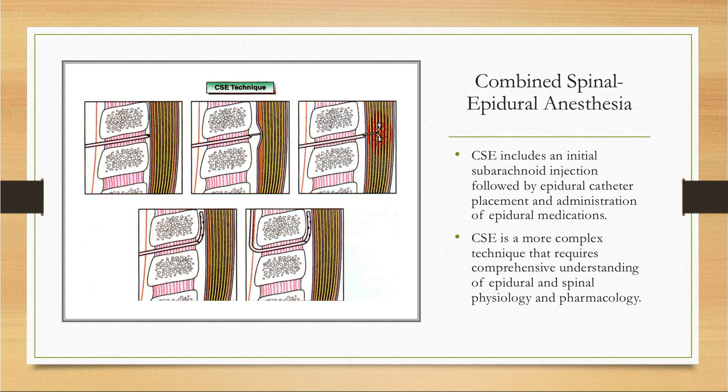Combined spinal epidural anesthesia, abbreviated as CSE, includes an initial subarachnoid injection, followed by epidural catheter placement, and administration of epidural medications. CSE is a more complex technique that requires comprehensive understanding of epidural and spinal physiology and pharmacology. Ultimately, this technique requires a skilled anesthesia provider to perform it effectively.